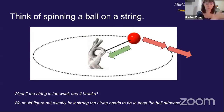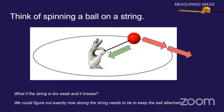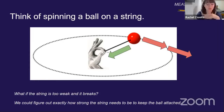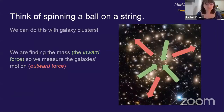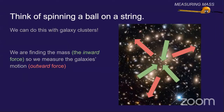That little point between where it would break and where it wouldn't — so we can figure out exactly how strong the string needs to be for this ball. With galaxy clusters, you can do the same thing.